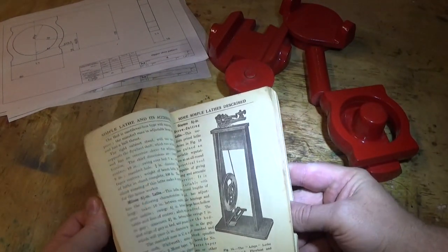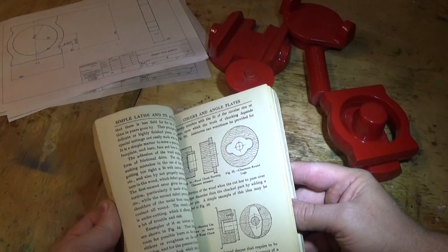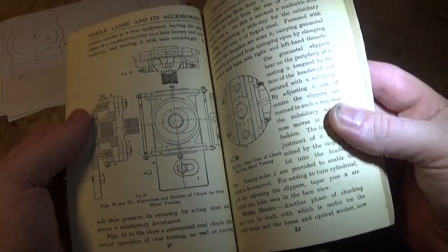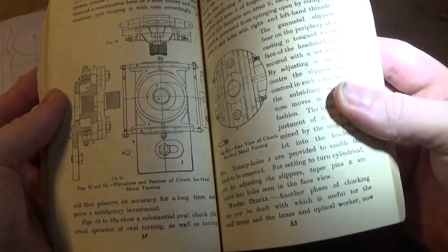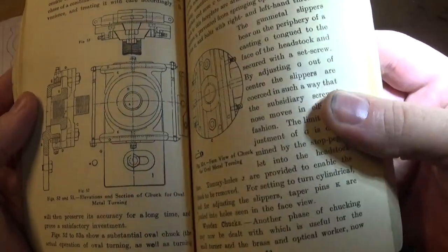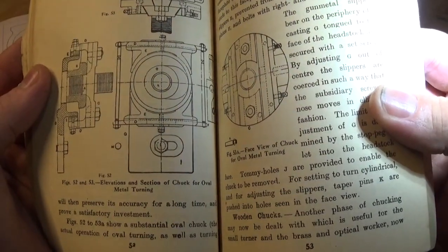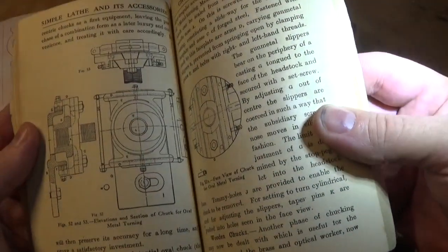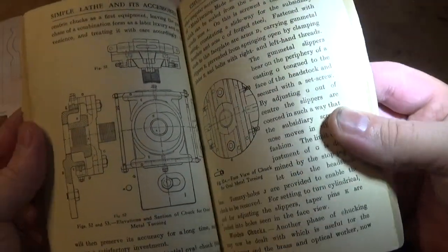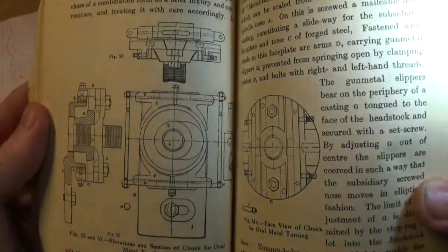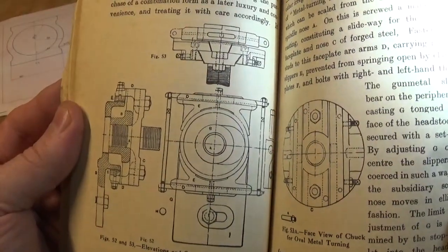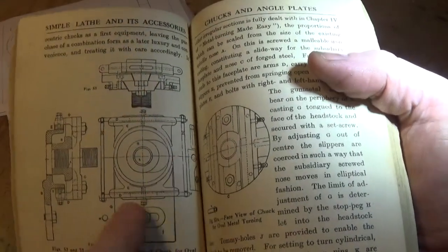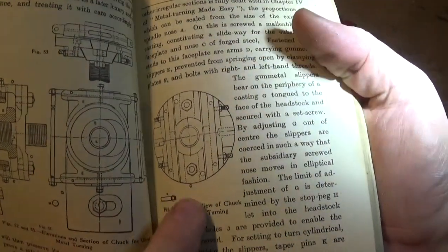There's a lot of cool stuff in this book. If we look under chucks and angle plates, there's a drawing, figure 52 and 53. It says elevations and sections of a chuck for oval metal turning, or an ellipse chuck. That's a fairly interesting thing and it's a fairly sketchy sort of drawing. You've got to guesstimate some of it, how it all goes together.